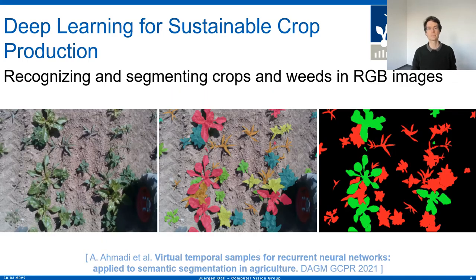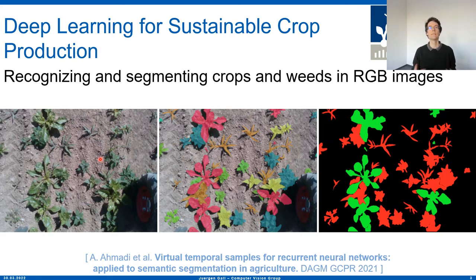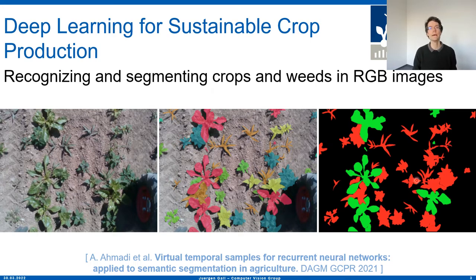Another example has been done by the group of Chris McCool. Here the cameras are closer to the ground — they are mounted to a moving robot. A deep neural network is used to distinguish different crops and different types of weeds, giving a binary segmentation where crops are shown in green and weeds in red.